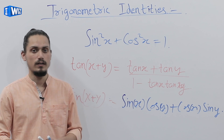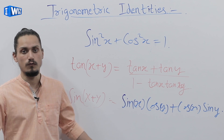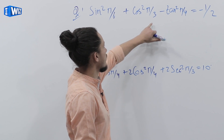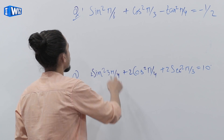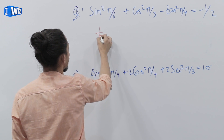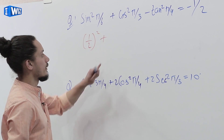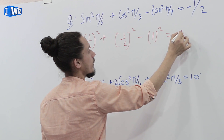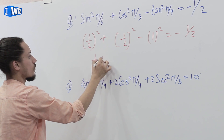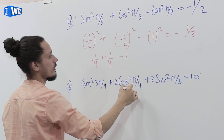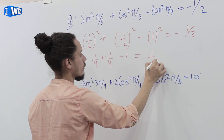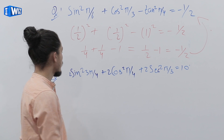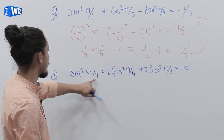Now we're going to use everything we learned in the last video and all the trigonometric identities to solve the following problems. The first problem is to prove that sin²(π/6) + cos²(π/3) − tan²(π/4) = −1/2. The value of sin(π/6) is 1/2, so (1/2)². Plus cos(π/3) is also 1/2, so (1/2)². Minus tan(π/4) is 1, so 1² = −1/2. Calculating: 1/4 + 1/4 − 1 = 1/2 − 1 = −1/2. Left hand side equals right hand side — first result proved.